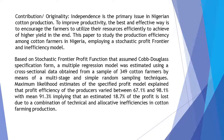Maximum likelihood estimates of the specified profit model explain that profit efficiency of the producers varied between 67.1 percent and 98.1 percent, with a mean of 91.3 percent, implying that an estimated 18.7 percent of profit is lost due to a combination of technical and allocative inefficiencies in cotton farming production.